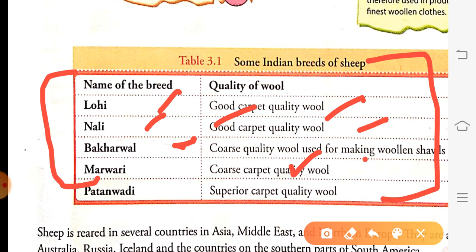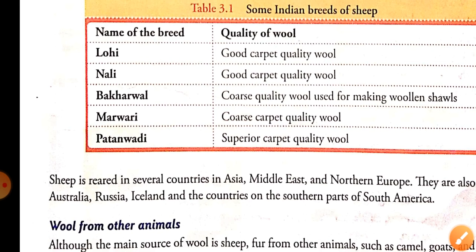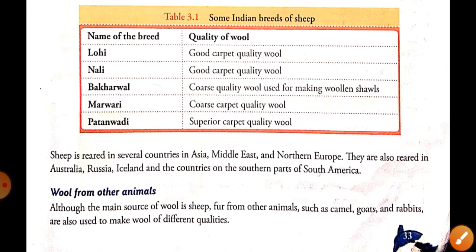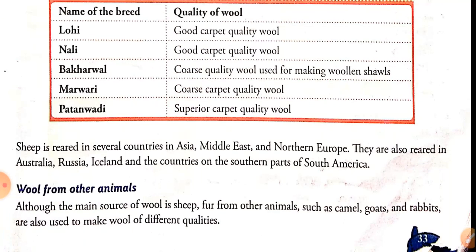Along with India, sheep are also reared in several countries in Asia, the Middle East, and Northern Europe. They are also found in Australia, Russia, Ireland, and some parts of South America. India is famous for good quality wool, and other notable countries for sheep rearing include Australia, Russia, and Iceland.